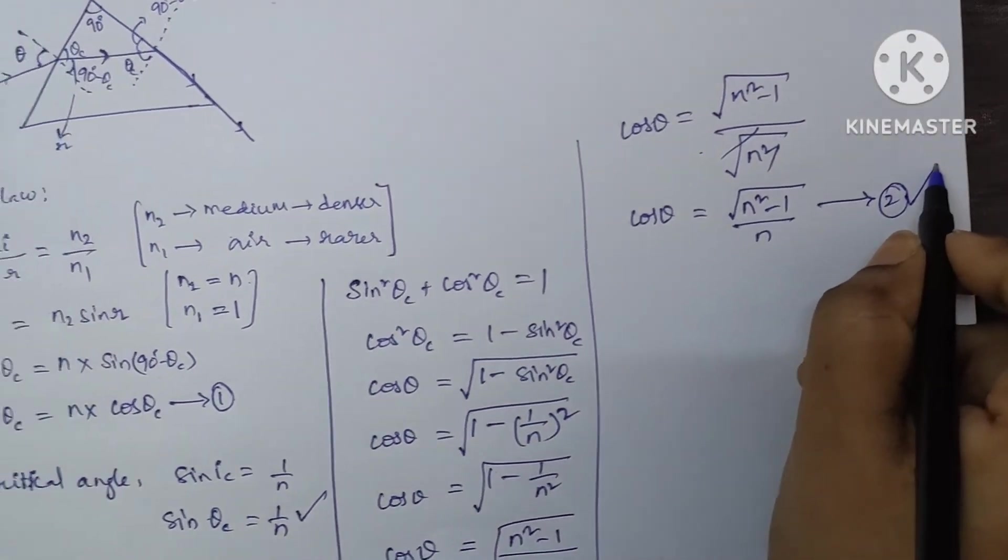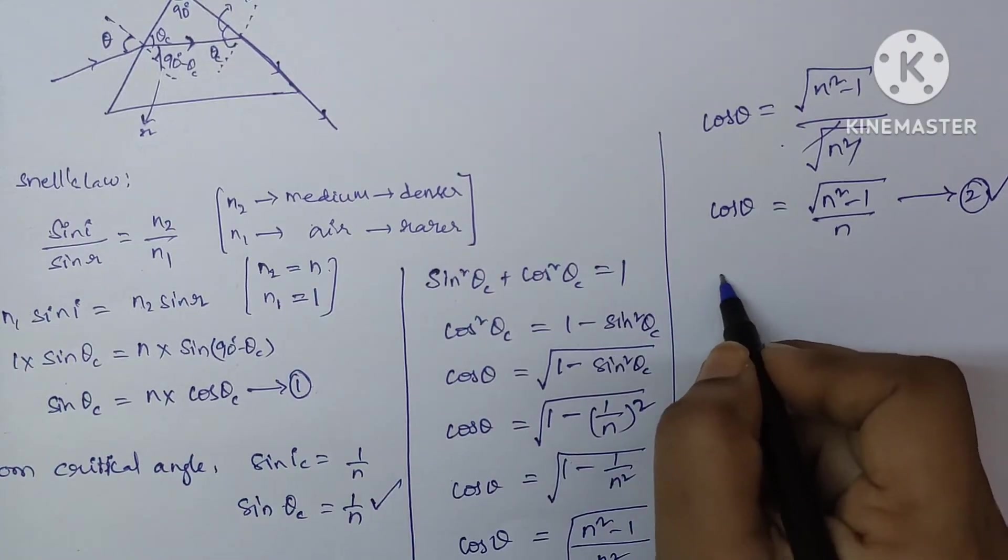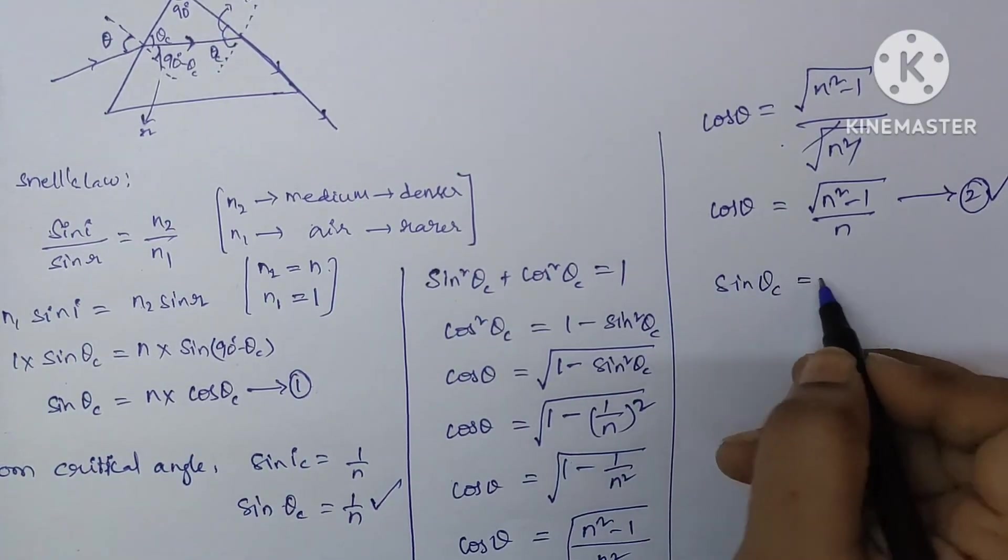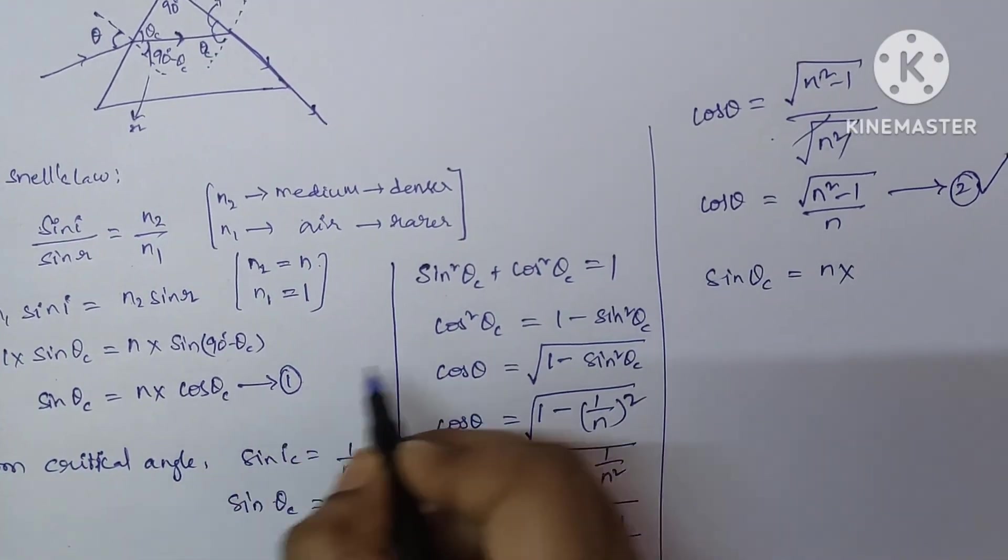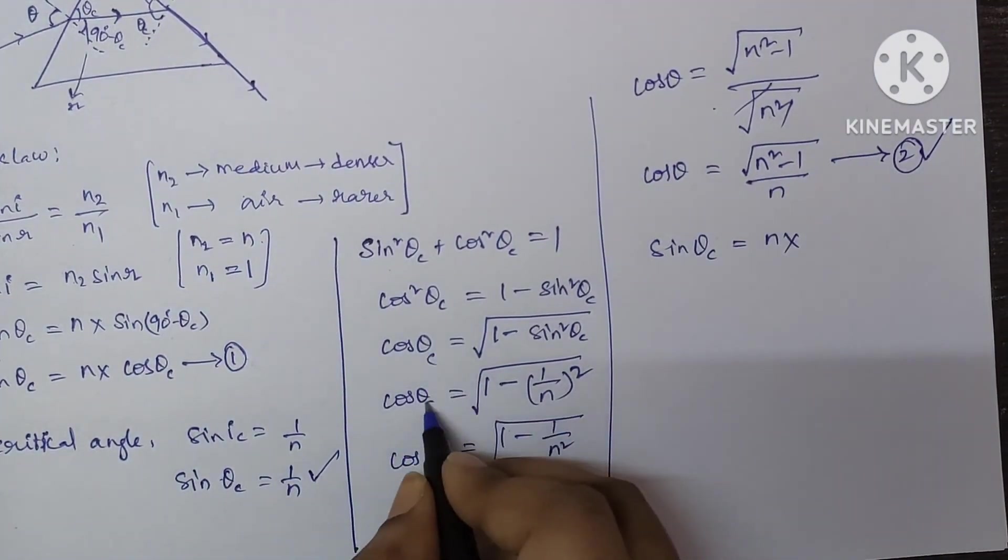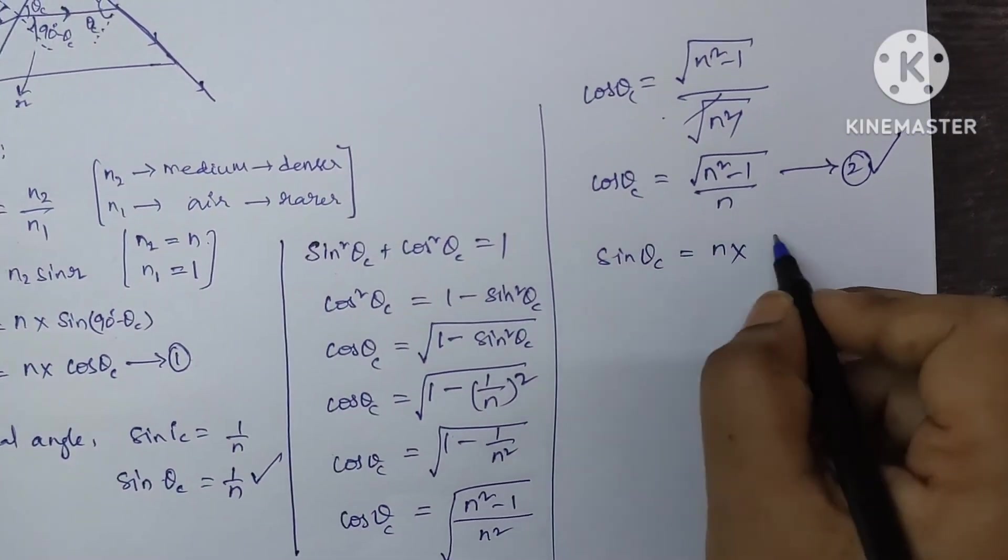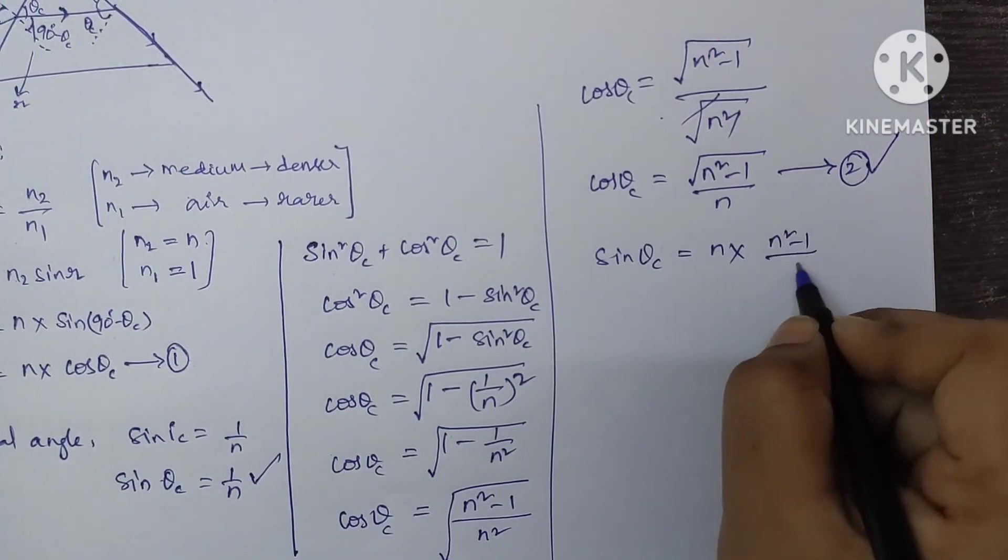Now, substitute equation number 2 in equation number 1. What is equation number 1? Sin theta c is equal to N into cos theta c value, which we already got. This is theta c, cos theta c. That is N square minus 1 by N.